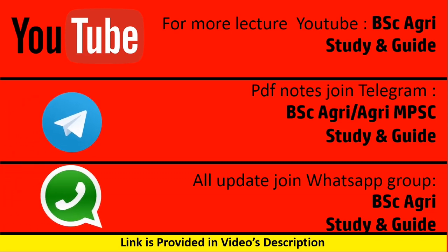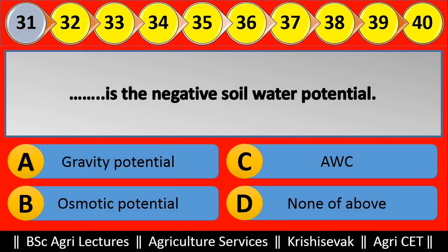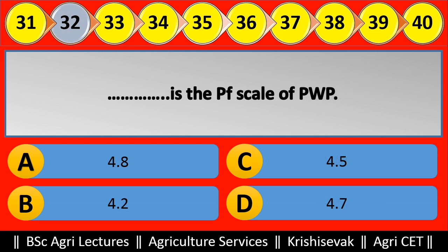Question 31: Blank is the negative soil water potential. Options are: (a) Gravity potential, (b) Osmotic potential, (c) AWC, (d) None of above. Right answer is Osmotic potential.